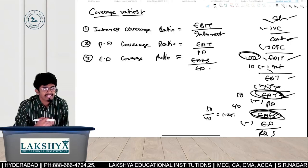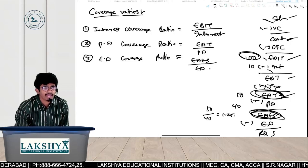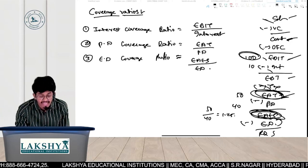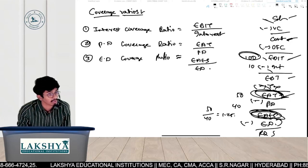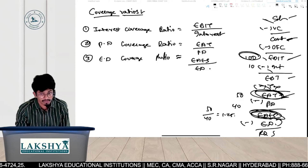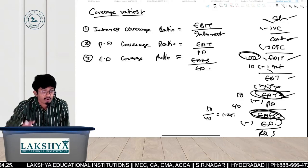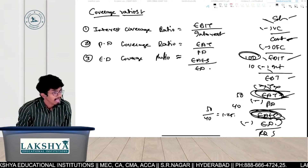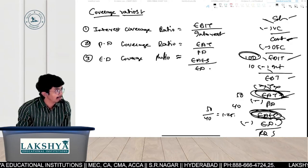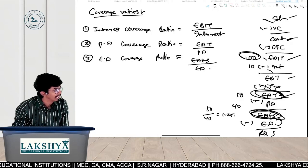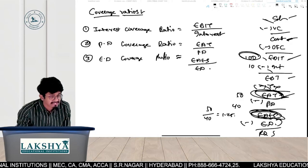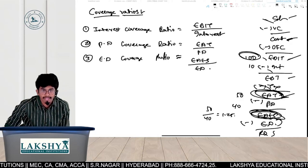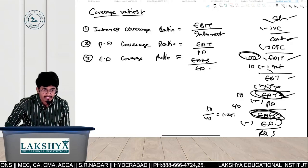From EAT, we still have to pay preference dividend, so what remains is Earnings Available to Equity Shareholders. The focus of equity shareholders is always on Earnings Available to Equity Shareholders. That's why Earnings Available to Equity Shareholders is divided by Equity Dividend.